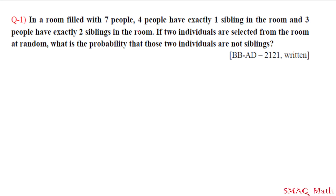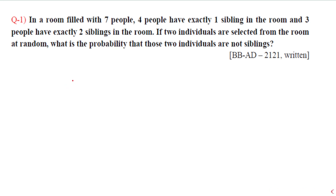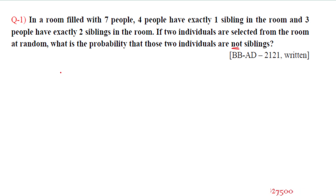So four people have exactly one sibling and three people have exactly two siblings. We have to think about the sibling character of each individual. Let's label the people A, B, C, D, E, F, and G.